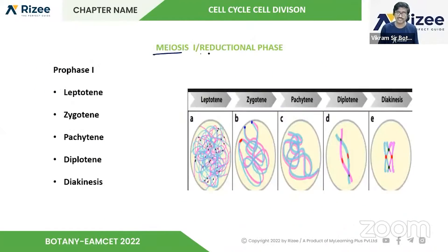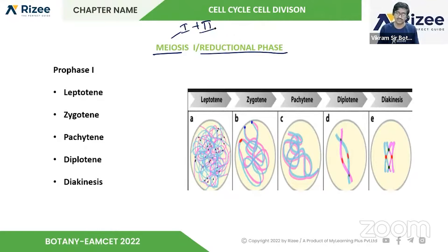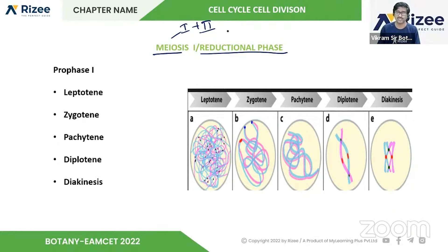Meiosis, also called the reductional phase, is further divided into two parts: Meiosis 1 and Meiosis 2. Meiosis 1 is also called the reductional phase, and here the chromosome number will be reduced to half.